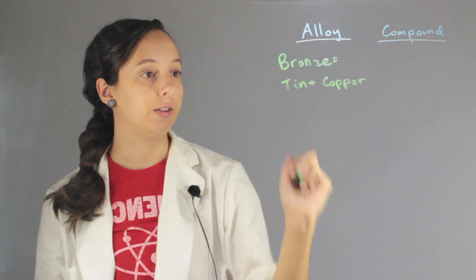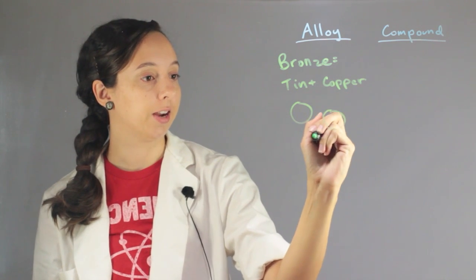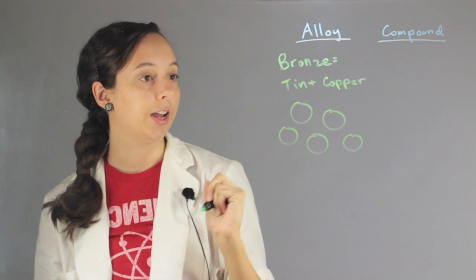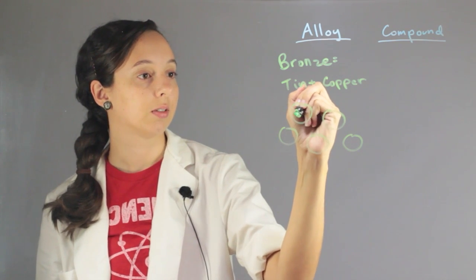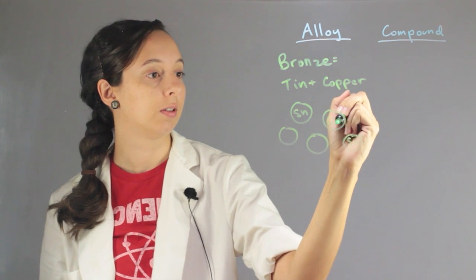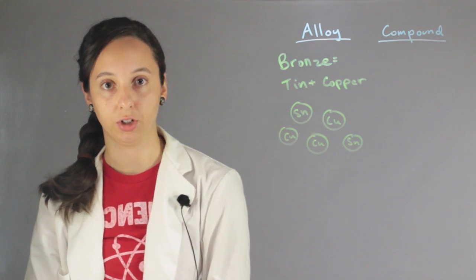And so if you have your little diagram here of how the molecules of bronze would look, you're gonna have some tins, Sn, you're gonna have some coppers, Cu, but they're not bonded to each other. They're just hanging out in the mixture.